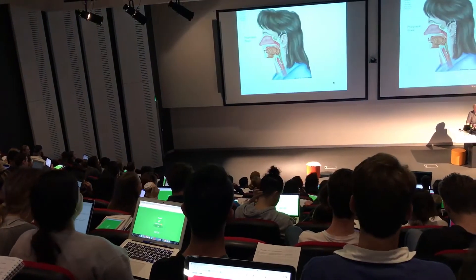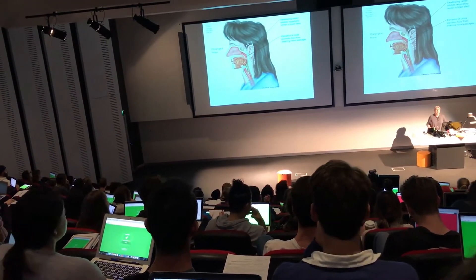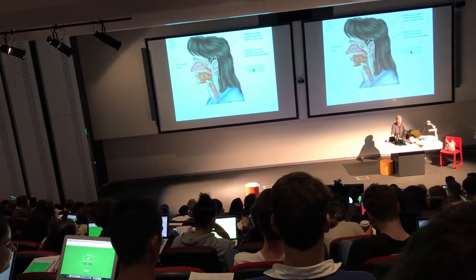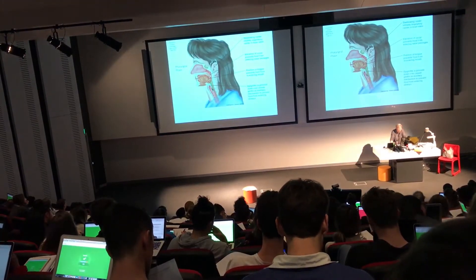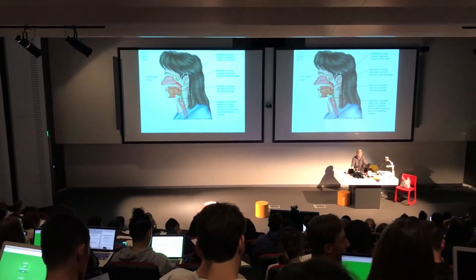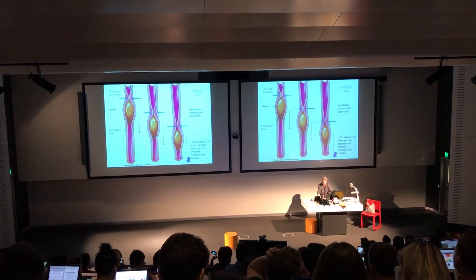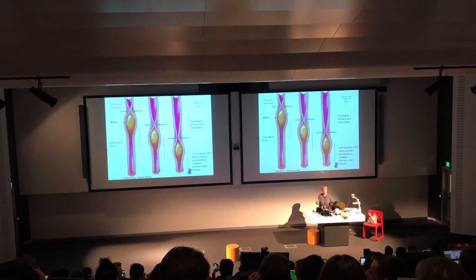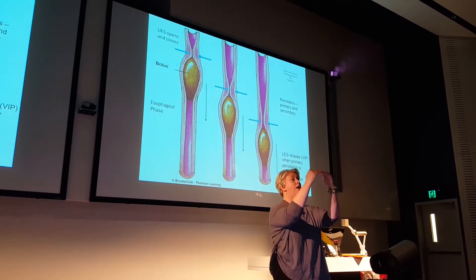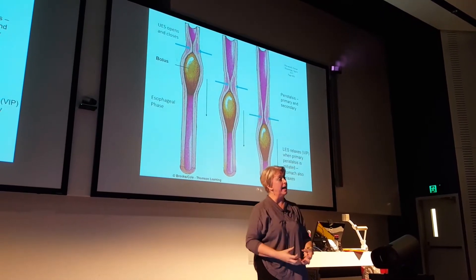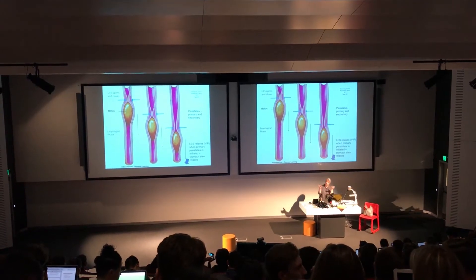So the pharyngeal phase — what happens? First thing: you stop breathing. The uvula, the little funny thing hanging down at the back of your throat, is elevated to stop food entering your nasal passages. The tongue positions up to stop food going back into the mouth. The epiglottis covers over the trachea so food doesn't aspirate into the lungs. A second wave of peristalsis will be initiated by the distension of the esophagus.